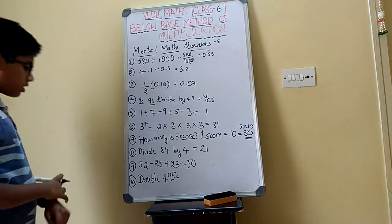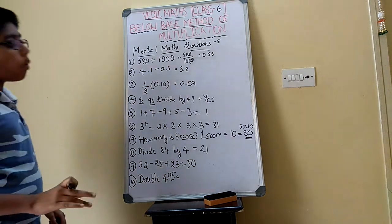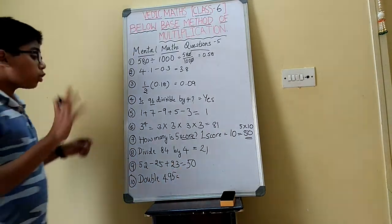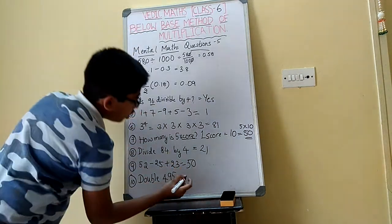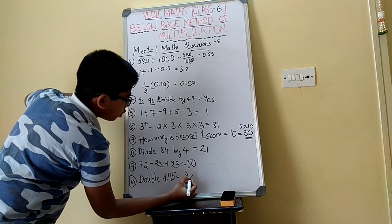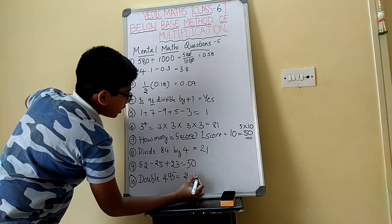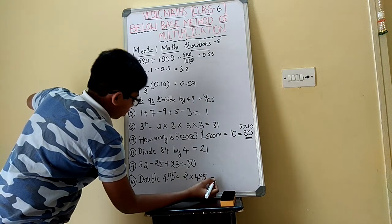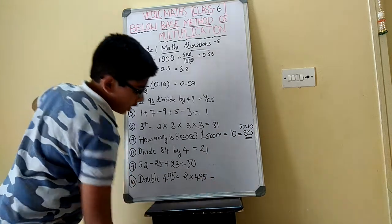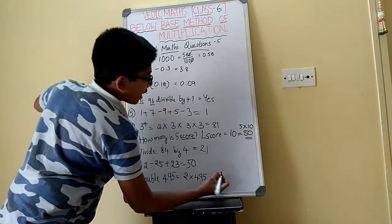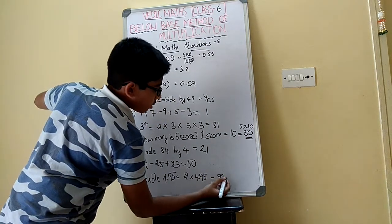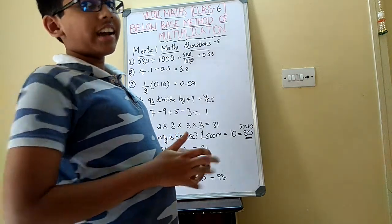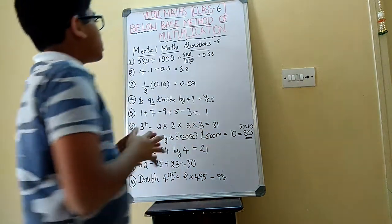Next is double 495. What is the meaning of double? We need to multiply 2 by that number. So 2 into 495 is going to be 990. Hope you all did it right — check your answers now.